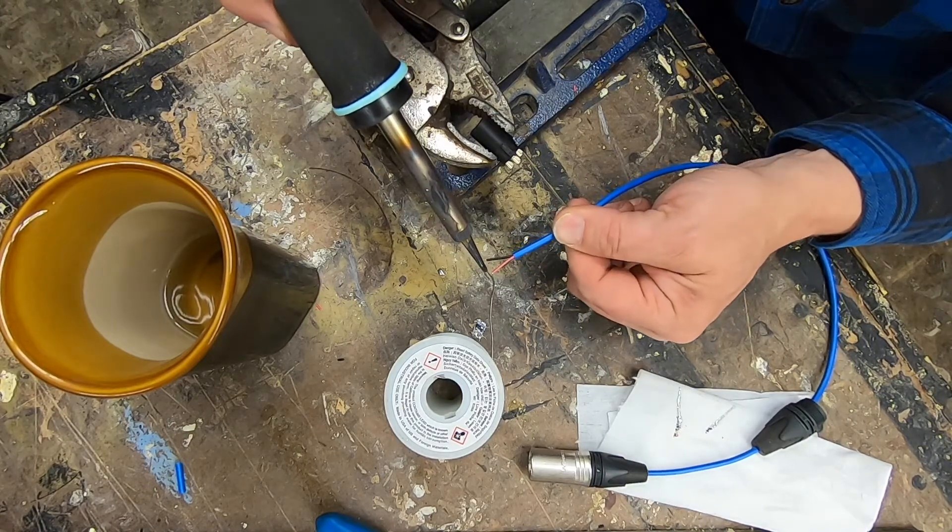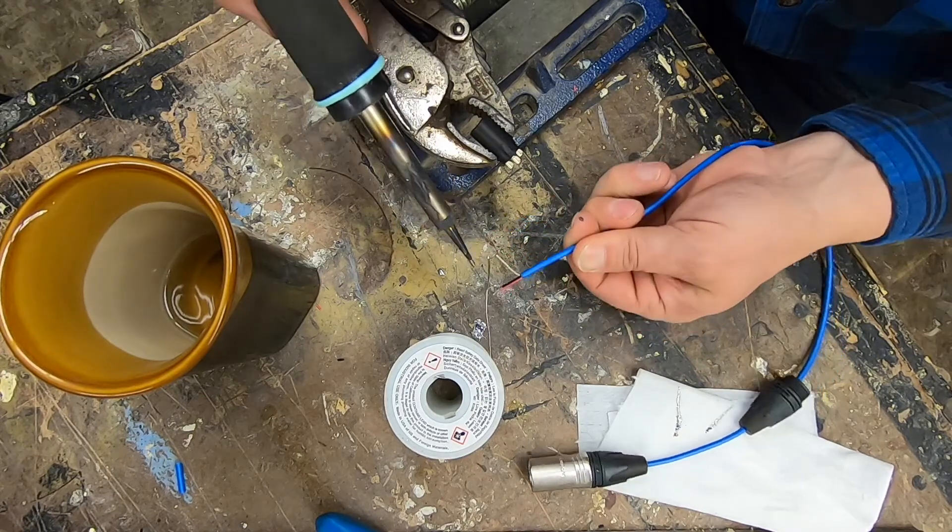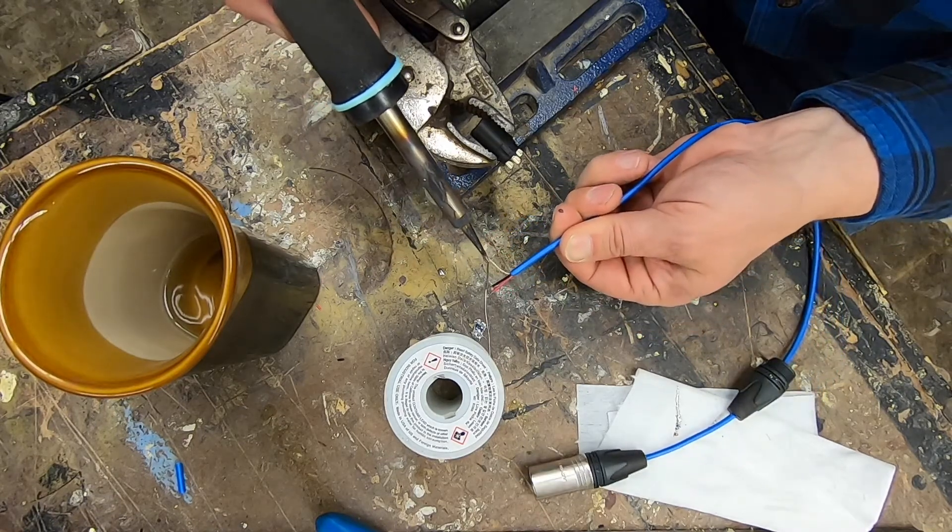And again, we're allowing the solder to wick up inside to those strands. The solder melting point is about 375 degrees.